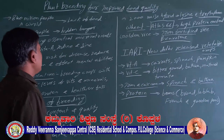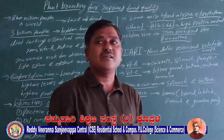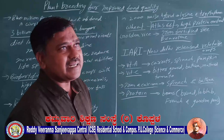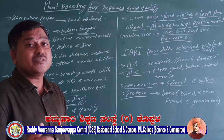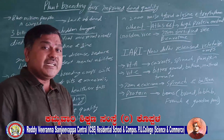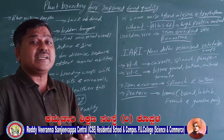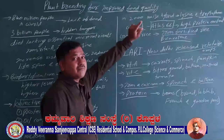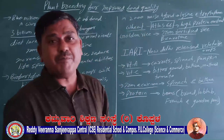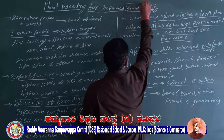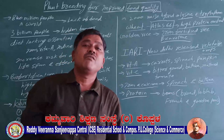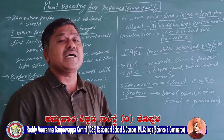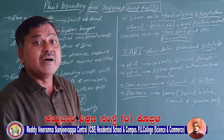So far, we have discussed plant breeding for disease resistance and plant breeding for pest resistance. These disease-resistant and pest-resistant plants are responsible for increasing the yield of the crop. Our main intention was to increase crop yield or increase food production. But in plant breeding for improved food quality, we focus not only on high yield but also on the quality of food. Throughout the world, nearly 840 million people are suffering from lack of food.